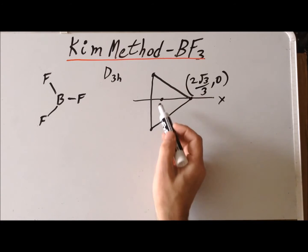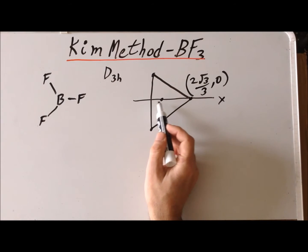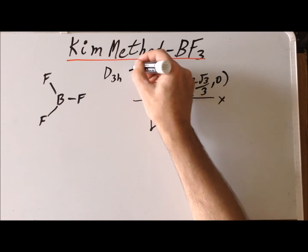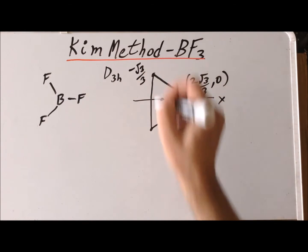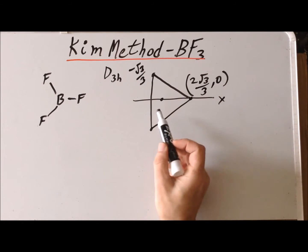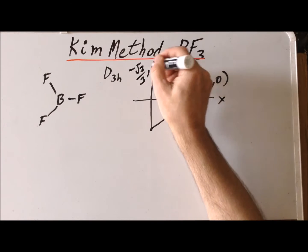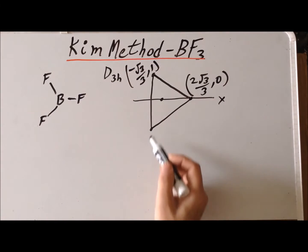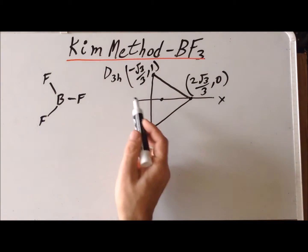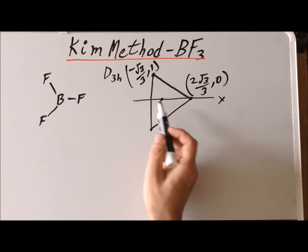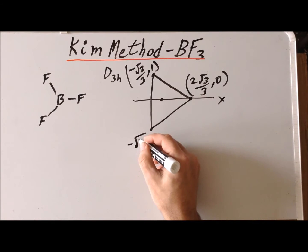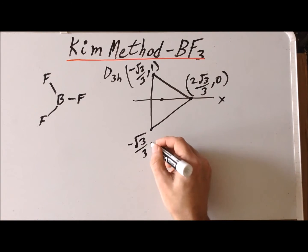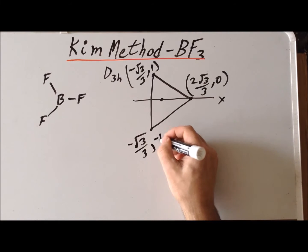This point here is a distance of square root of 3 over 3 to the left of x, so its x-coordinate is going to be minus the square root of 3 over 3, and its y-coordinate is going to be 1. Similarly, for this third point, it's the same distance to the left of the origin, so its x-coordinate is also minus the square root of 3 over 3, and its y-coordinate is going to be minus 1.